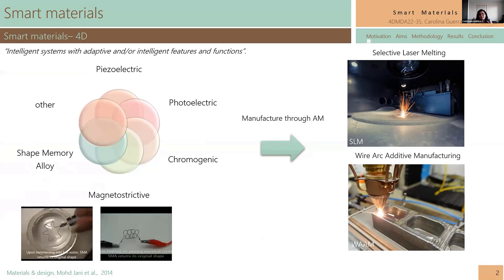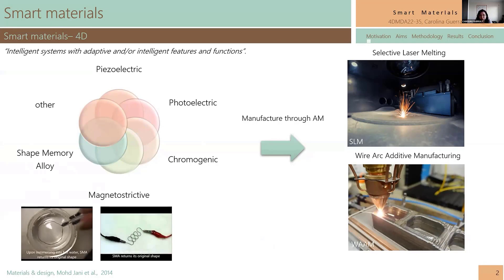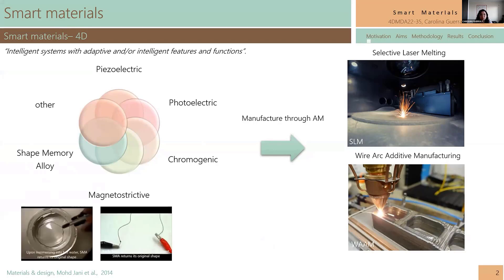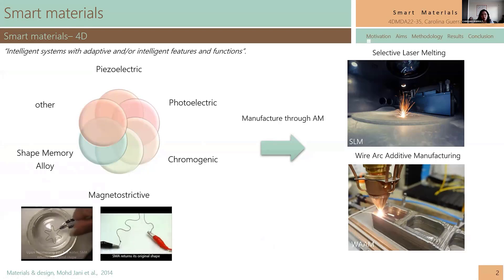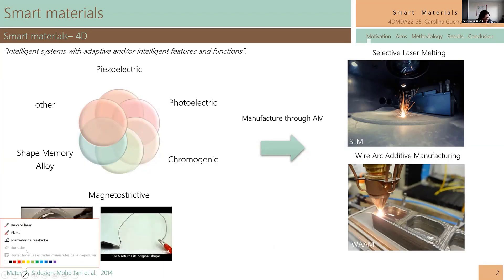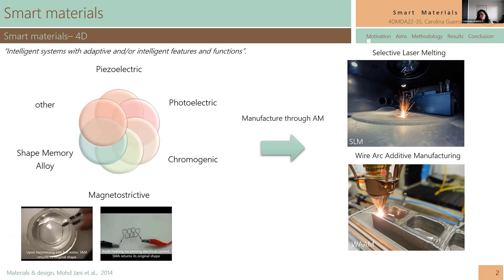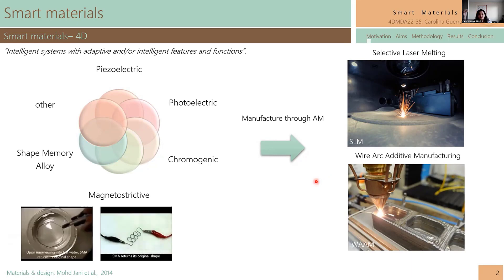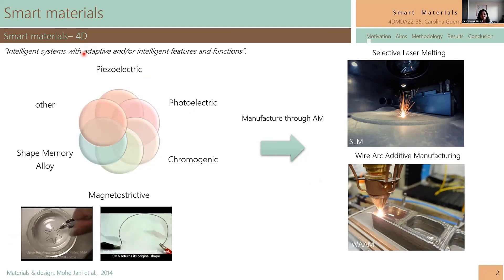This material has the particularity that it can respond to a stimulus, such as temperature, deformation or stress, or electric or magnetic field as well. And when they are fabricated by additive manufacturing, like SLM or wire arc additive manufacturing, you can add another dimension, which is time. So for this reason, they are called 4D materials.